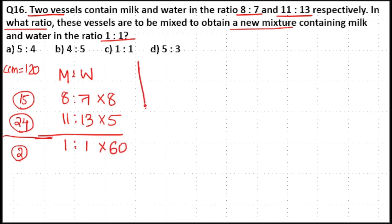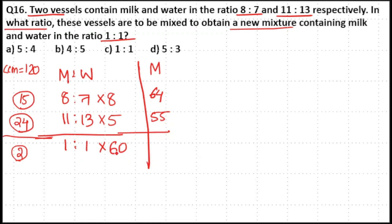Now find the milk parts using the allegation method. 8 multiplied by 8 is equal to 64 units of milk in the first vessel. 11 multiplied by 5 is equal to 55 units of milk in the second vessel. We have equalized the parts, which is why we take 64 and 55. In the resultant mixture, the milk part is equal to 60 multiplied by 1, which is 60 units.